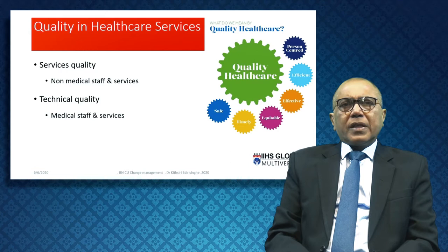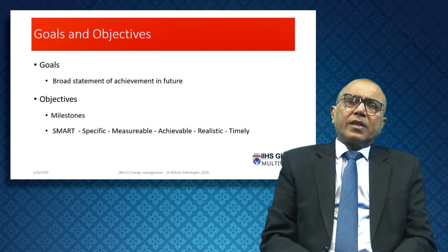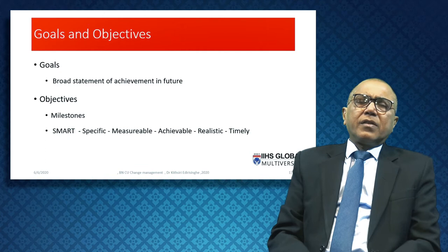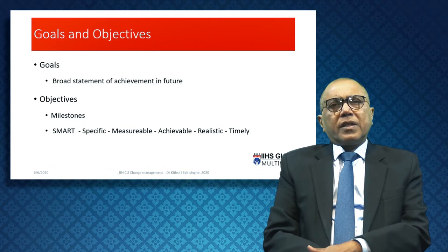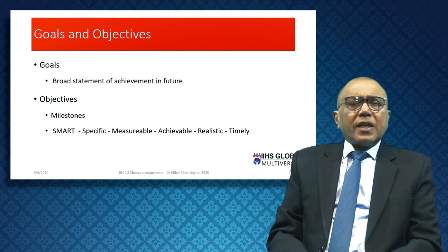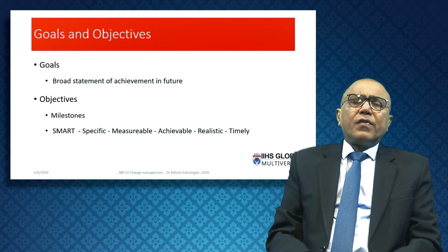Goals and objectives: goals are broad statements for the future, and objectives are milestones — how you get there. Going back to Peter Drucker's definition of management: it's getting things done through and working with people by using resources efficiently and effectively to achieve the goals and objectives of the organization.